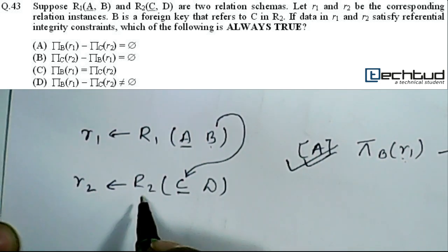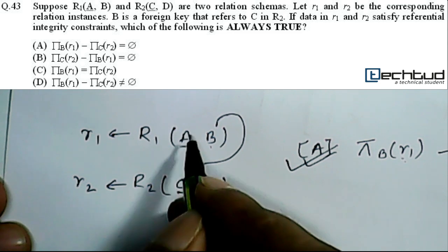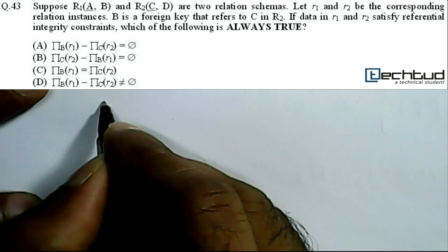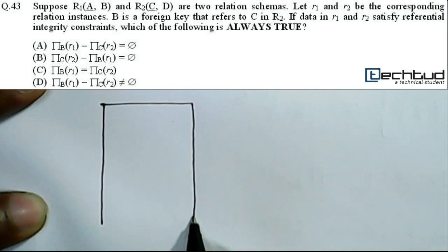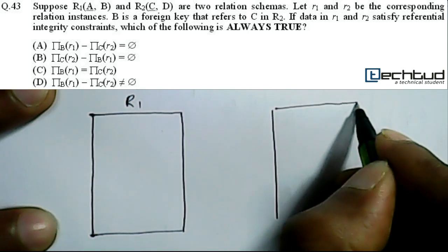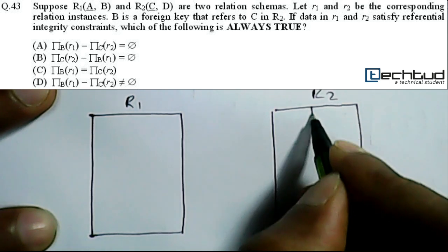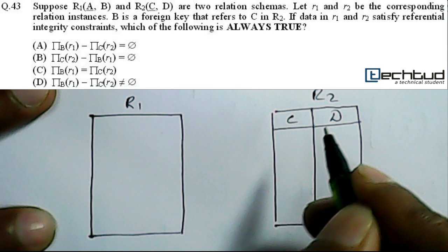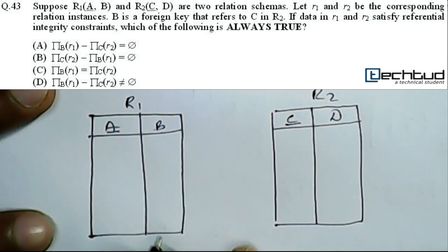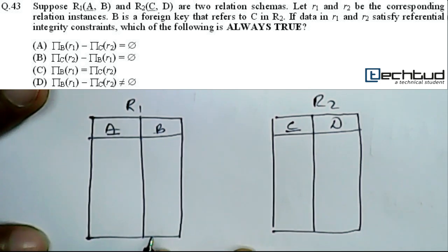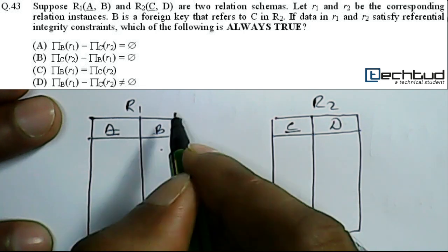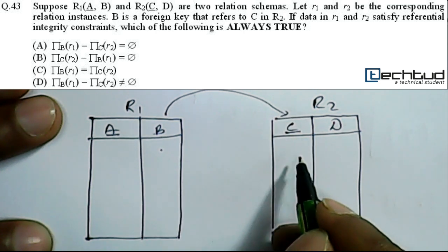Let us see with an example. If this is a table which we are referring from another table — let us take this is R1 and this is R2. R2 has columns C and D, and R1 has columns A and B. A is the primary key of R1 and C is the primary key of R2. As per the referential integrity constraint, whatever data we enter in B — since B refers to C — that value must already be present in C.